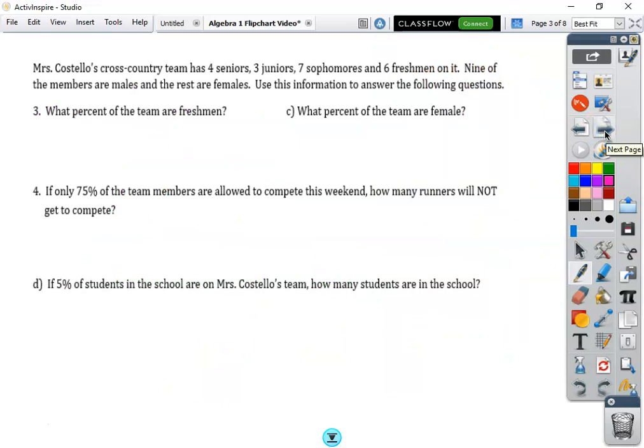Now we're going to move on to application, our favorite thing, some word problems. These are definitely important especially when it comes to finals and when we have our assessments, our tests and quizzes, you are going to have some word problems. We got to read through these. I always like to underline so read along as I go through this. Ms. Costello's cross-country team has four seniors, three juniors, seven sophomores and six freshmen. Nine of the members are males and the rest are females. Use this information to answer the following questions. In order to do any information we first need to figure out the total. What is the total of students that we have? Four plus three plus seven plus six is 20. We got 20 total. If nine are males, therefore 20 minus nine would be 11 females. We want to break it down as much as possible.